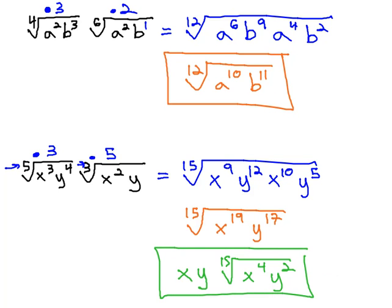Our final simplified answer, then, is xy times the fifteenth root of x to the 4th, y squared. We can multiply together these radicals of mixed index by identifying the least common index, and multiplying the exponents in the index by the same value to build up to that common index.